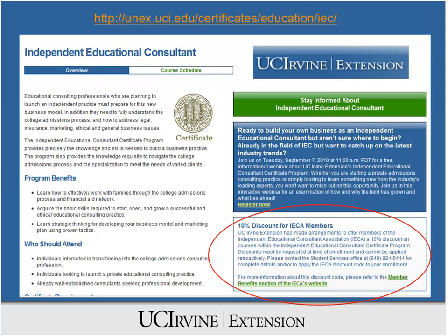Here's a screenshot of the certificate page on our website. There is a lot of information about our program requirements and course offerings on this page, and I also wanted to point out the section covering the discount we provide to members of the IECA. Members are given a 10% discount on courses within UCI Extension's Independent Educational Consultant Certificate Program. Completion of our certificate program also satisfies the experience requirement for associate membership in the IECA. If you have any membership questions or to receive the discount code, please contact the IECA Membership Office directly.